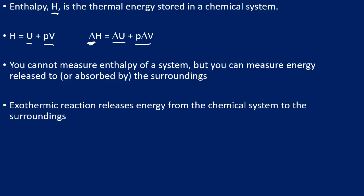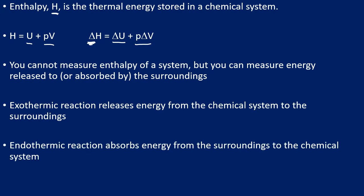An exothermic reaction releases energy from the chemical system to the surroundings, so we see an increase in temperature because energy has been released by the chemicals to the surroundings. An endothermic reaction is where energy has been absorbed from the surroundings into the chemical system, so the enthalpy of the chemical system has increased and the energy was taken from the surroundings, meaning we see a decrease in temperature.